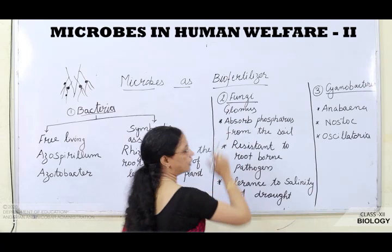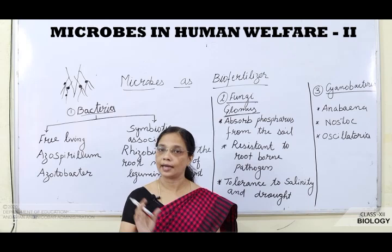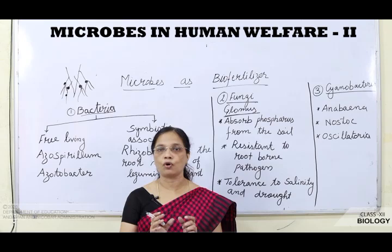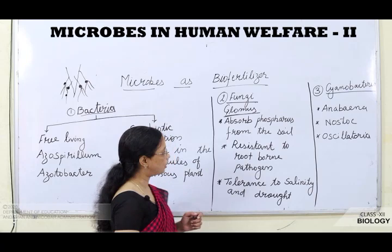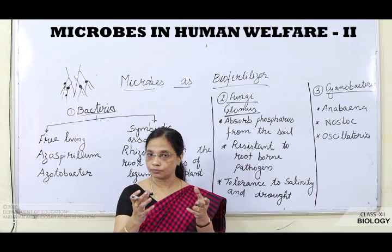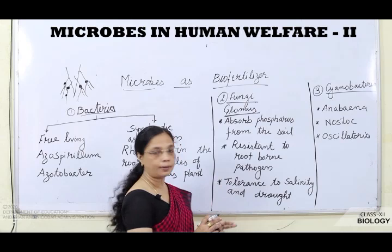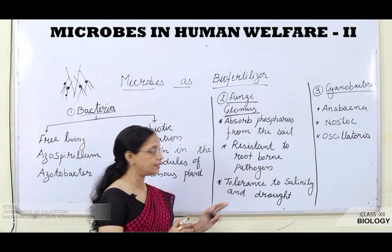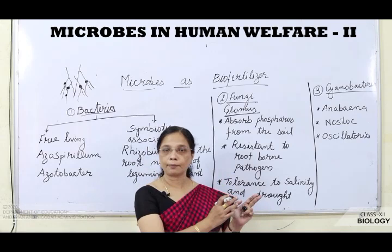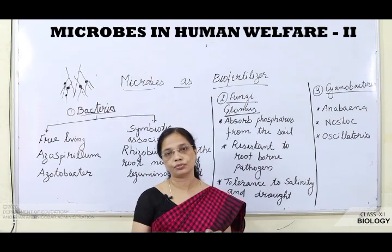Next is fungi. A fungus called Glomus acts as mycorrhiza — a symbiotic association of fungal hyphae with the roots of higher plants. Through this association, it absorbs phosphorus from the soil and supplies it to the plant. It also gives resistance to root-borne pathogens and helps plants tolerate salinity and drought. In return, the fungus derives nutrition from the higher plant.